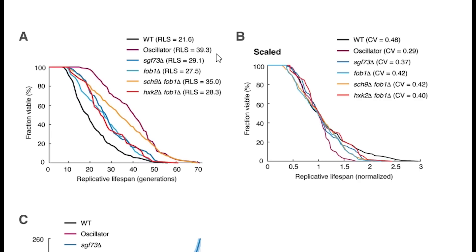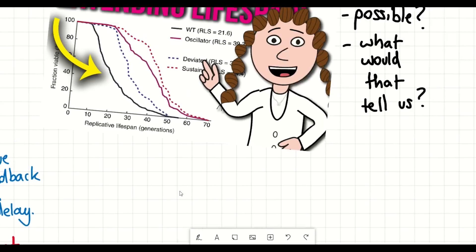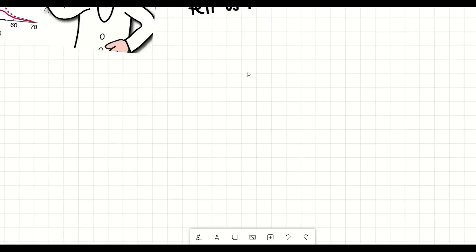So what are the key take-homes from this paper? Well firstly it goes to show that it's possible to rationally rewire cellular dynamics as a way to delay cellular aging and increase longevity. Essentially, synthetic biology is cool.